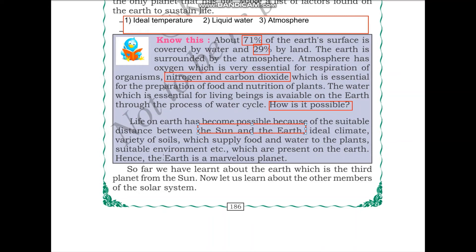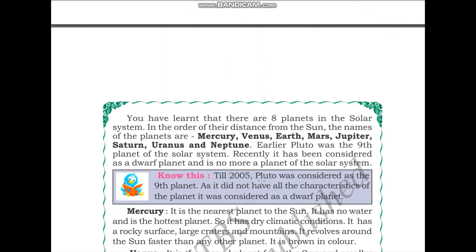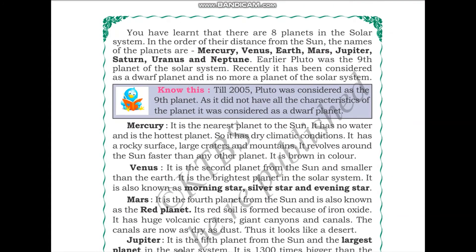So far we have learned about the earth, which is the third planet from the sun — remember, it comes after Mercury and Venus. Now let us learn about the other members of the solar system. There are eight planets in the solar system in order of their distance from the sun.